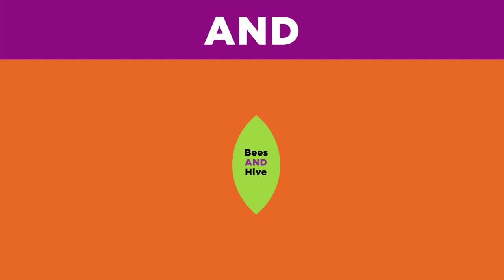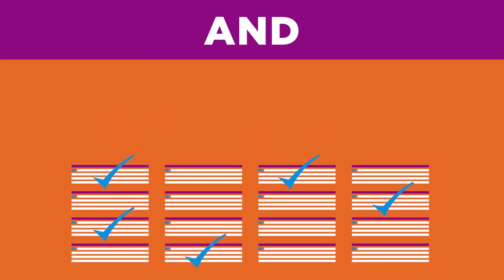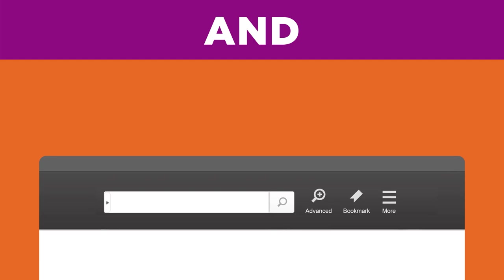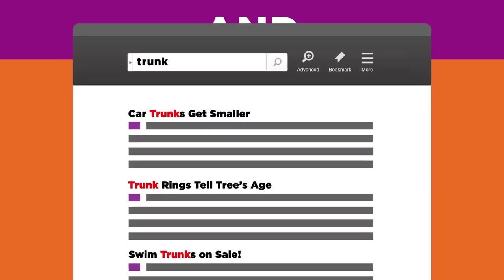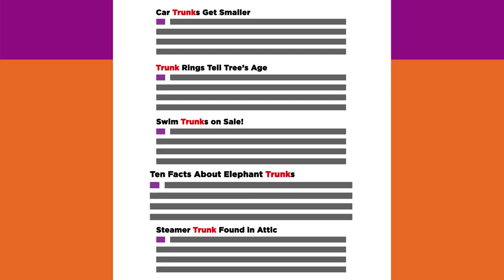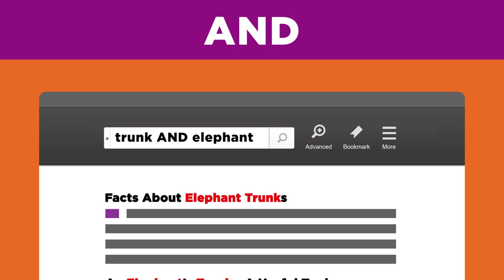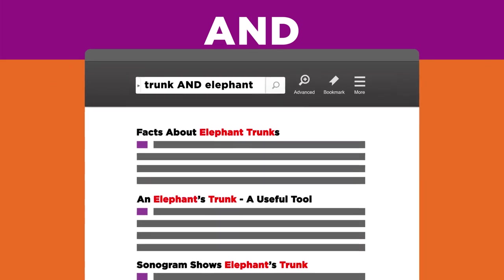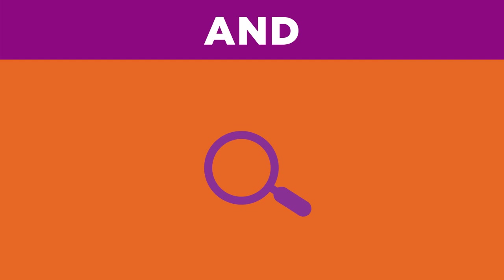Once you find what you need, you can then search for bees AND pollination. After that, try bees AND endangered, and so on. Using the Boolean operator AND helps you get results specific to your topic. Let's look at another example. Say you need information about how an elephant uses its trunk. You complete a library database search for just the keyword trunk, and you get results where only one has anything to do with an elephant's trunk. Now look what happens when you use the Boolean operator AND with the keywords trunk and elephant — the results only include information related to an elephant's trunk. Using a second keyword makes your search more specific. The Boolean operator AND narrows your search results.